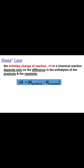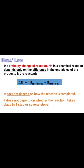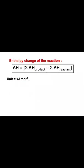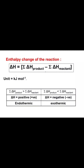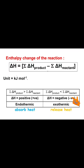We may use this formula to calculate the enthalpy change of reactions. It does not depend on how the reaction is completed, or whether the reaction takes place in a single step or several steps. In thermochemistry we deal with heat energy in the unit of joule or kilojoule. The unit of enthalpy change is kilojoule per mole. From the sign of the enthalpy change, we can classify reactions as either exothermic or endothermic — a positive enthalpy change indicates an endothermic process, while a negative enthalpy change corresponds to an exothermic process.